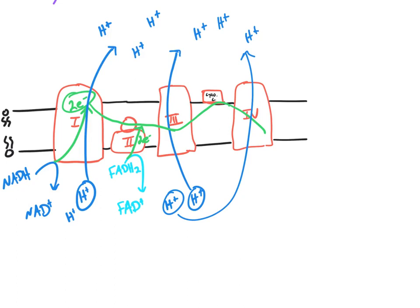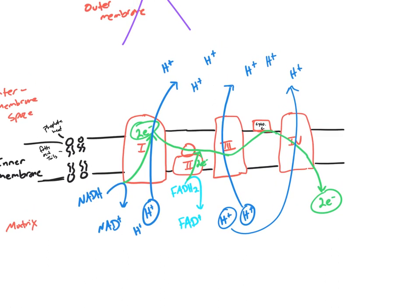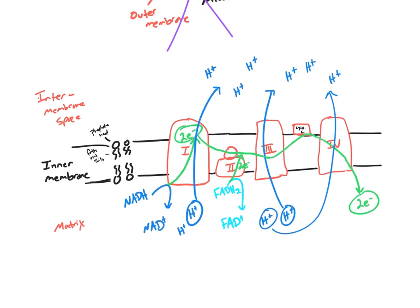And those electrons will finally come out and be released from protein number four. We have an accumulation of hydrogen ions now in the intermembrane space. And the space within the mitochondria is pretty small, allowing for a high concentration of hydrogen ions to develop.